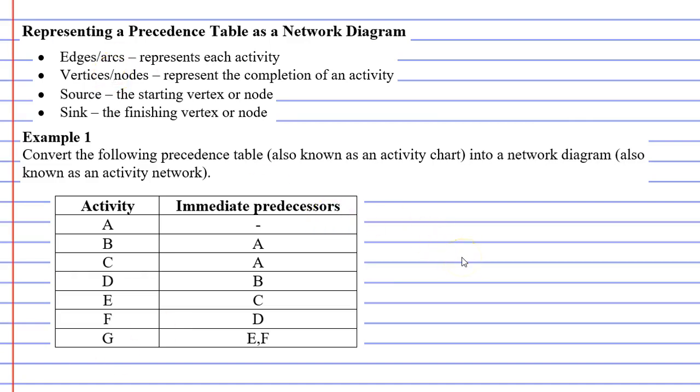To start our network diagram, we need to draw a single vertex which represents the start. You might notice that the starting vertex is also known as the source. Sometimes it'll say source, sometimes it will say start.